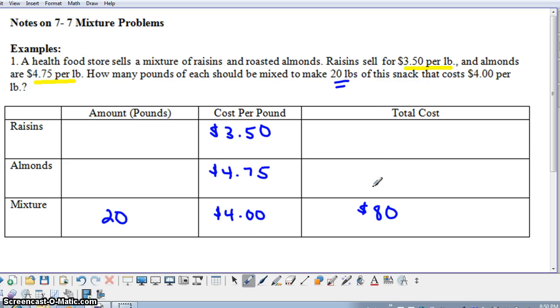Now we don't know how many pounds of raisins we're going to have, so I'm going to say X. Let's say we were to use one pound of raisins, then we'd use 19 pounds of almonds, since these have to add to 20. If we were to use two pounds of raisins, we'd have 18 pounds of almonds, because these have to add to 20. So in order for me to figure out how many pounds of almonds I need, if I know the amount of raisins, I would just take 20 minus the number of pounds of raisins to get the number of pounds of almonds.